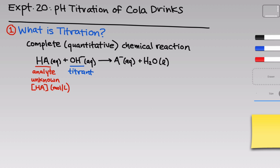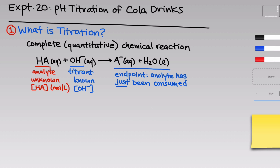The analyte is the thing we don't know much about and the thing we're trying to find the concentration of. We know its chemical identity — we have to know that to write the chemical equation — but we don't know its concentration in moles per liter within a solution of interest. The titrant, on the other hand, is something we've prepared ourselves, so we know the molarity of the titrant, in this case hydroxide. The idea is to combine the titrant with the analyte until we reach a defined point known as the end point, at which the analyte has just been consumed by the added titrant.